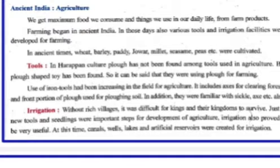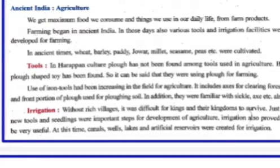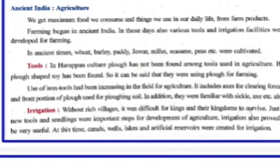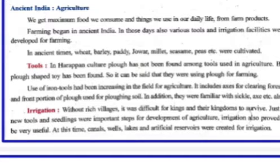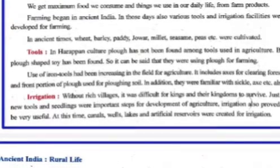First is agriculture. India is a diverse country and agriculture is the main purpose, as many people live their livelihood from it. We get maximum food we consume and things we use in our daily life from farm products. Farming began in ancient India, and various tools and irrigation facilities were developed for farming.